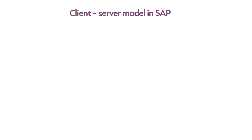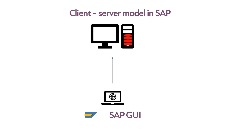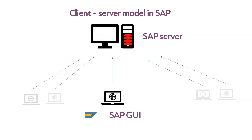The same client-server model is used for the SAP system. On your local computer you have a special program to connect to the SAP system, which is called SAP GUI. You connect to the SAP server, provide login details and password, and you can operate on the system. You can create SAP documents, execute reports, and analyze data. SAP is available for many other users in the company, so they can log in using SAP GUI installed on their computers with their own users and passwords to the same system and operate the same data.